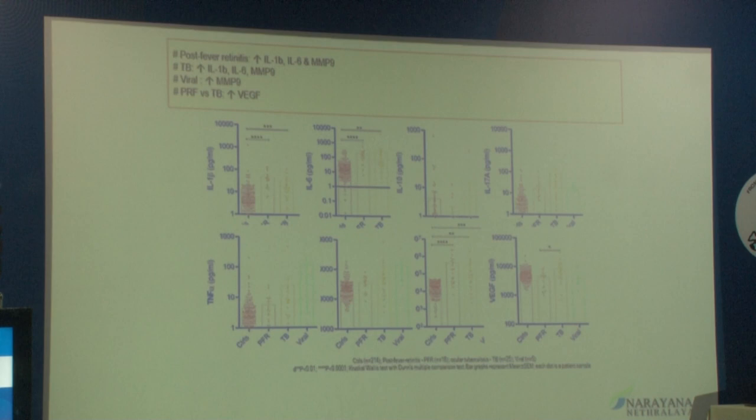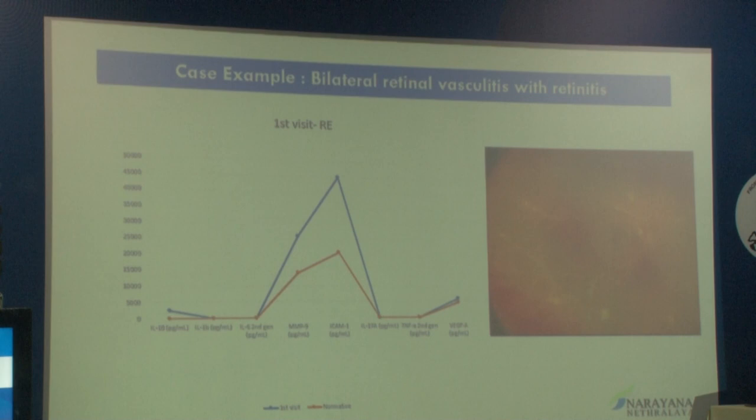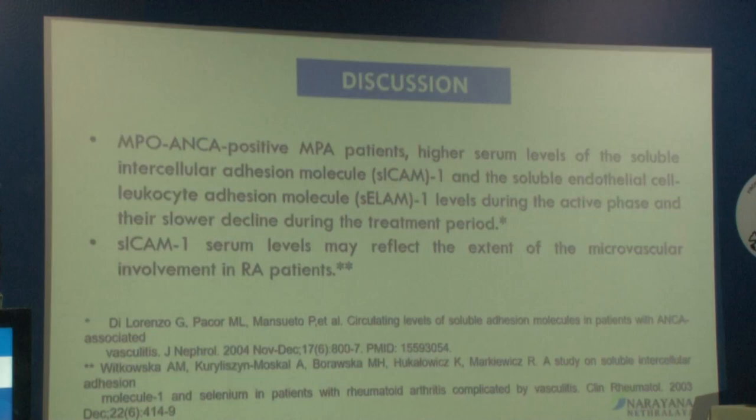As a case example, a bilateral retinal vasculitis with retinitis patient had high levels of MMP9, sICAM, and VEGF in both eyes. After treatment, these levels were significantly reduced. On discussion, MMP9 and CRP-positive patients had higher serum levels of soluble ICAM and soluble ELAM, which were highly elevated during the active phase and slowly declined during the treatment phase.